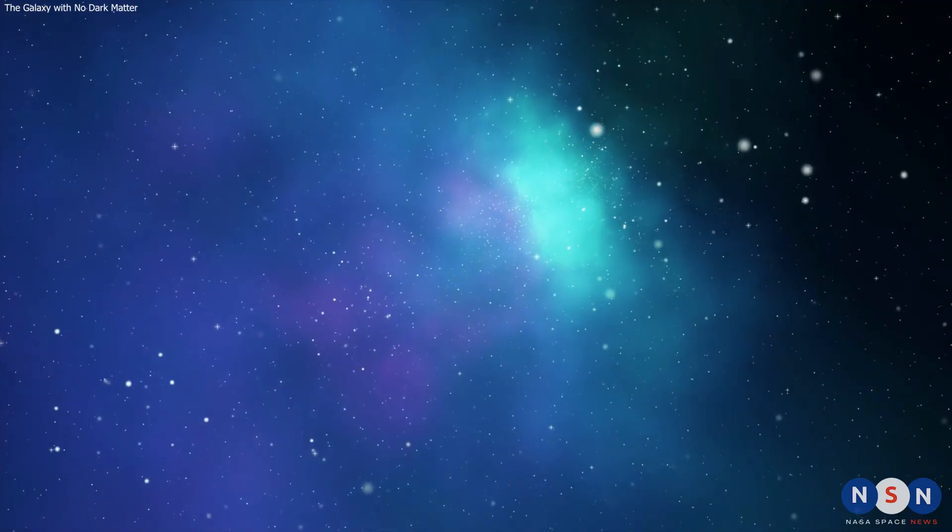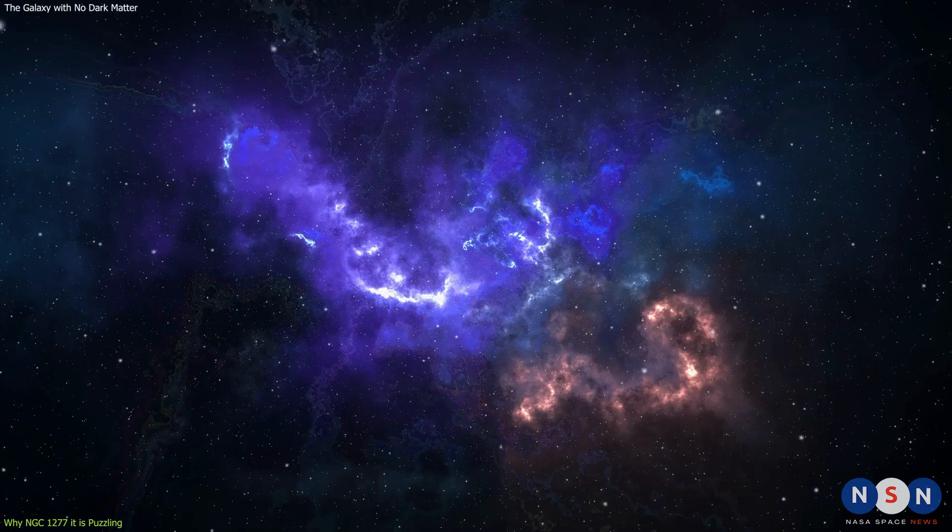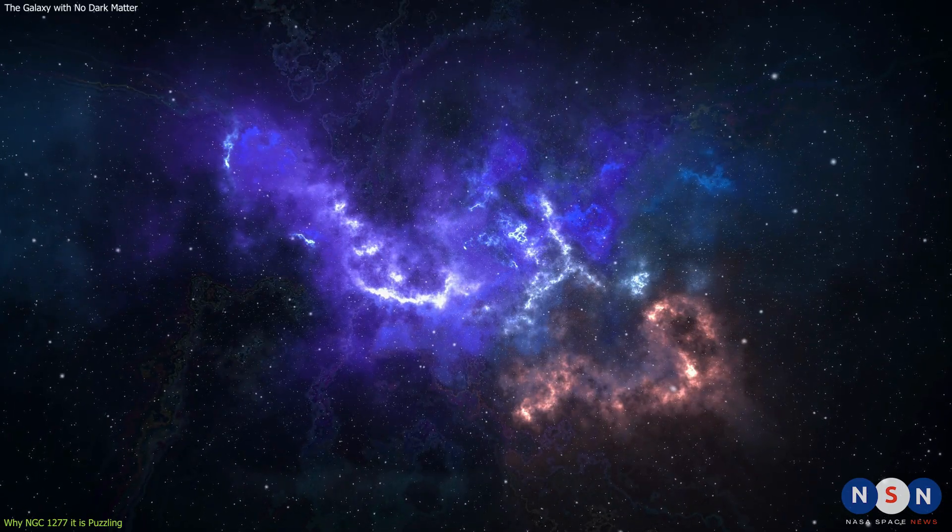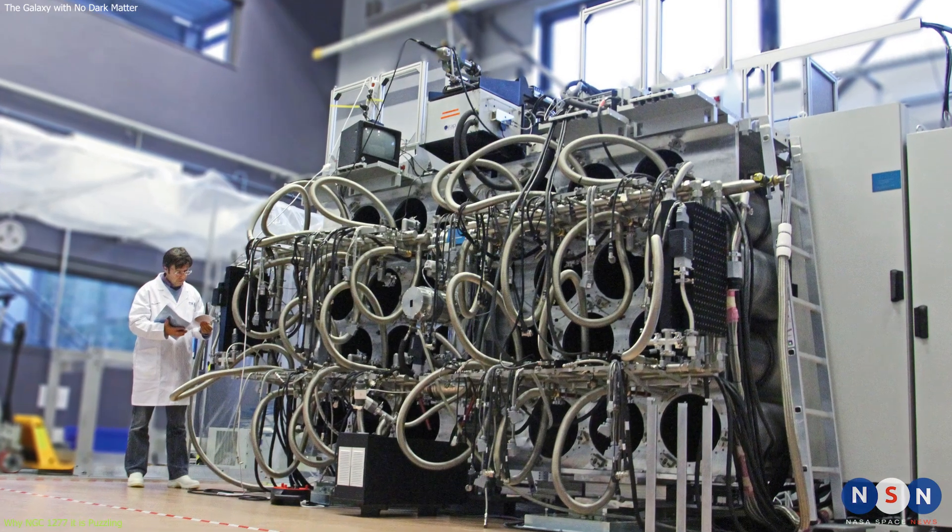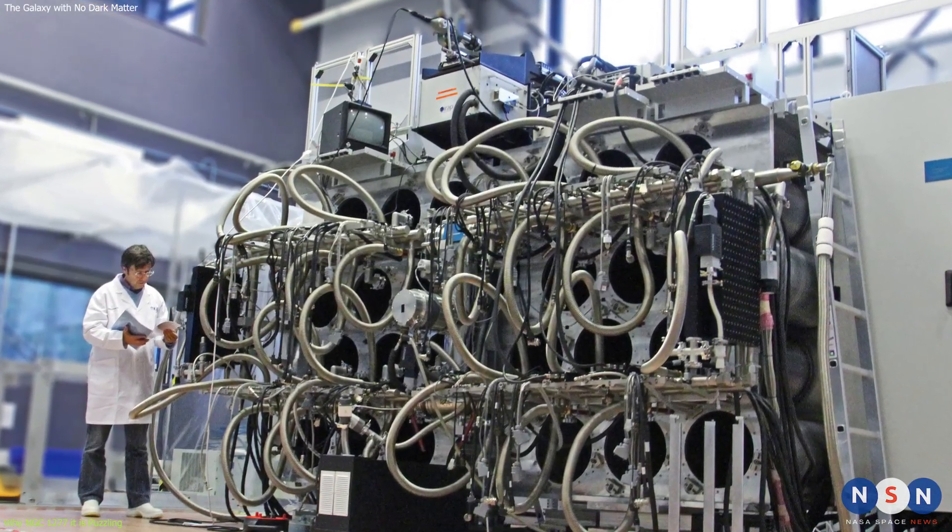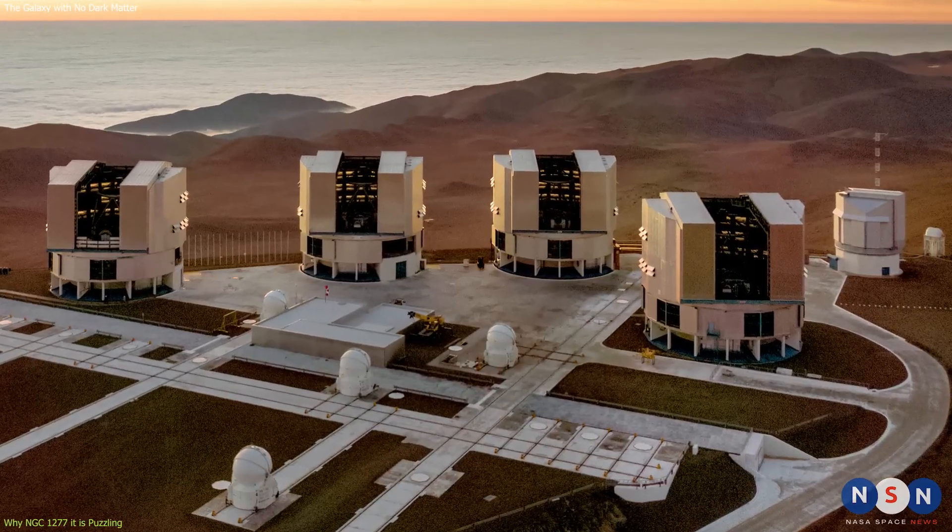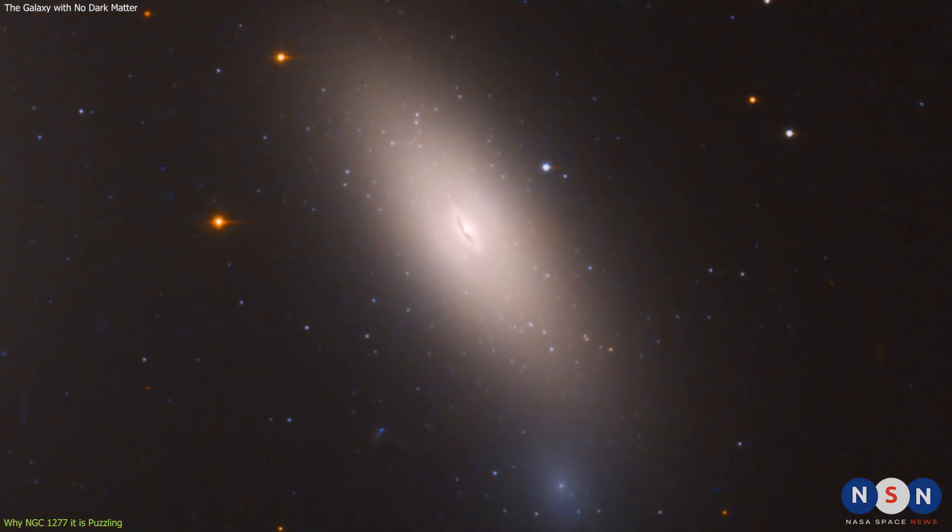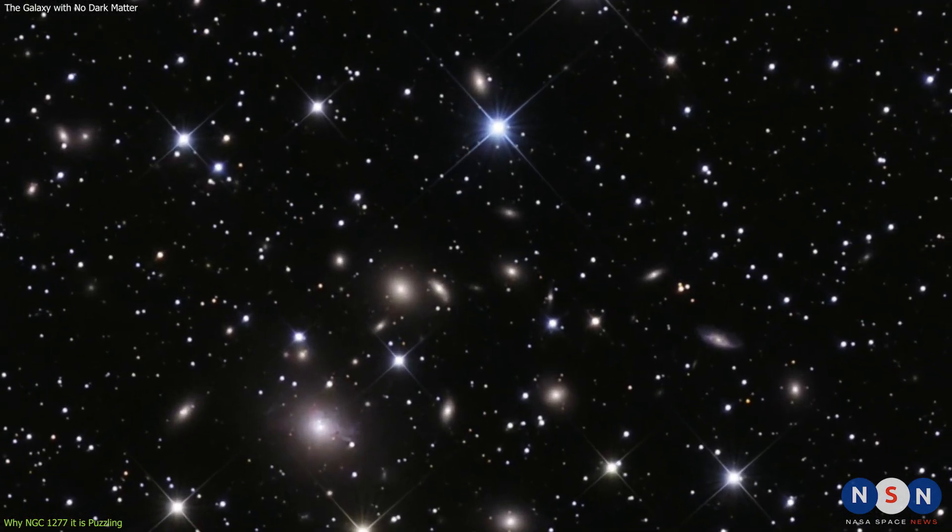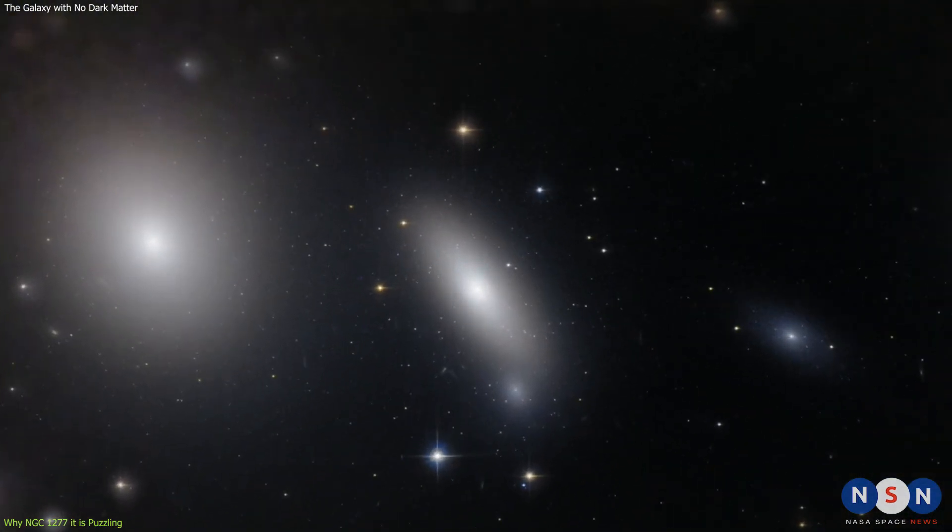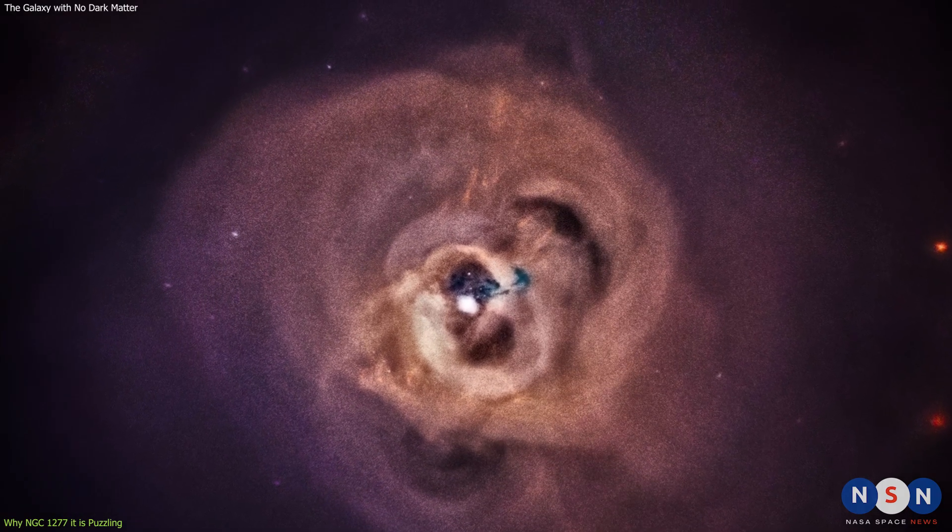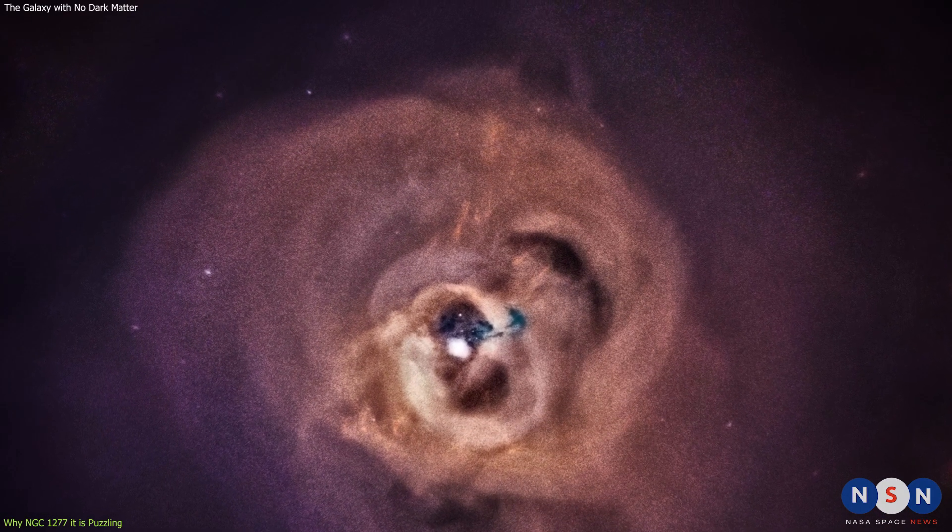Now that we have a basic understanding of what dark matter is and how it affects galaxies, let's talk about the new discovery that has shaken up our view of the universe. The discovery was made by a team of scientists led by Sebastian Comeron from the Instituto de Astrofisica de Canarias in Spain. They used an instrument called MUSE, Multi-Unit Spectroscopic Explorer, on the Very Large Telescope in Chile, to study a galaxy called NGC 1277. This galaxy is a peculiar galaxy located about 220 million light-years away from us in the constellation Perseus. It is part of a cluster of galaxies called Perseus Cluster, which is one of the most massive structures in the nearby universe.